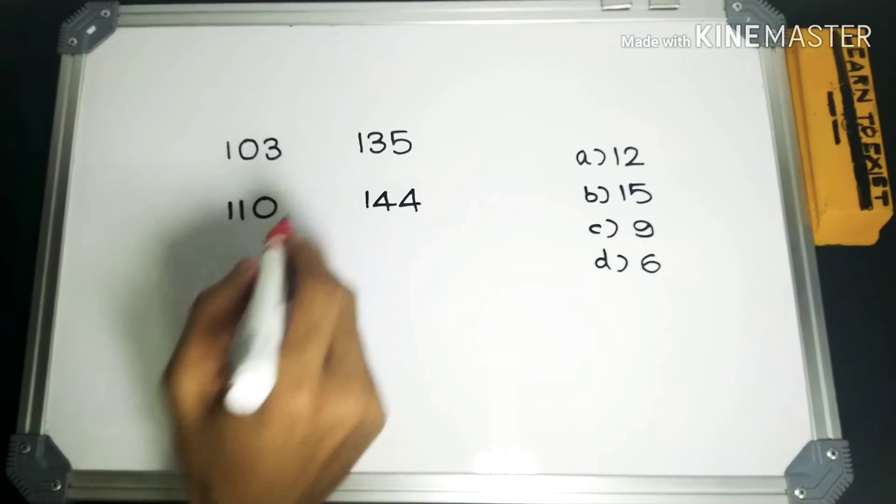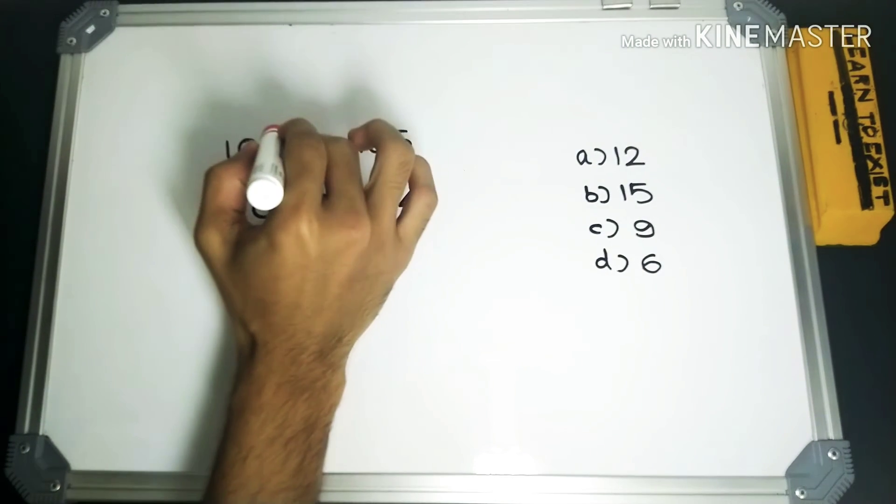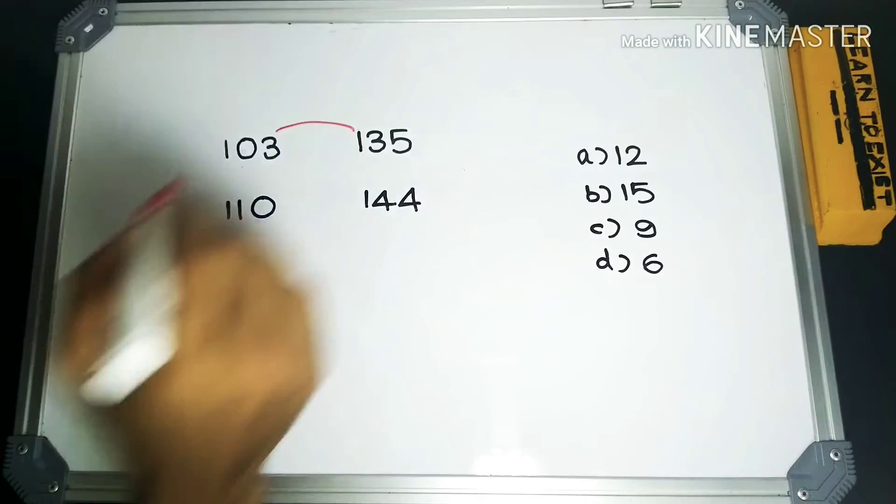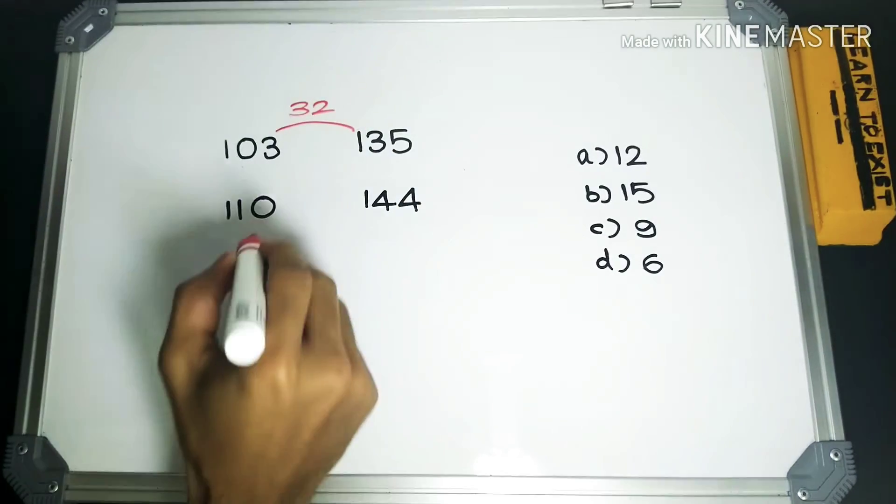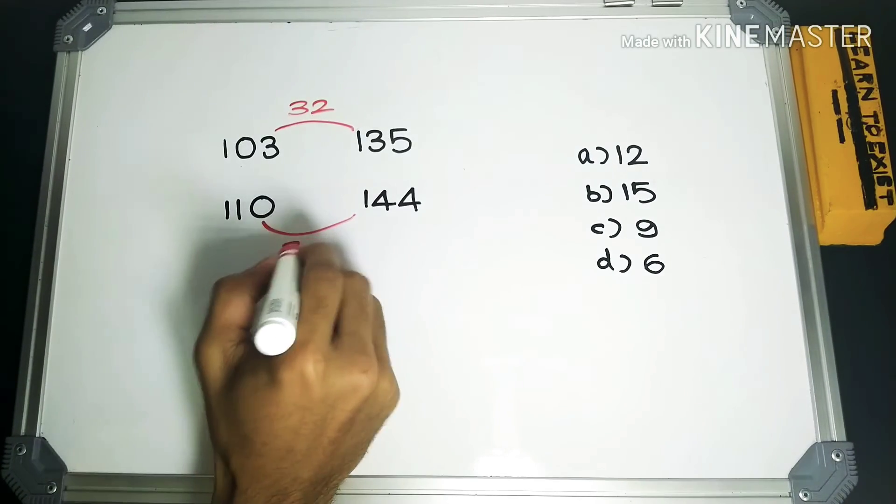Now this is what we are going to do. We will write down the difference of these two numbers here, which would be 32, and the difference of these two numbers will be 34.